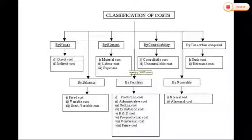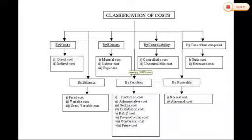Expenses are the indirect expenses. Once the product is manufactured, whatever other expenses are required to make the product sellable and distributable — to reach the product to the final consumer — those expenses will be considered as the expenses element, which is the third classification under element-wise classification.